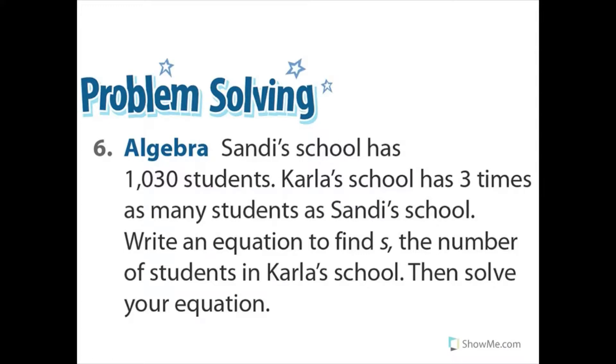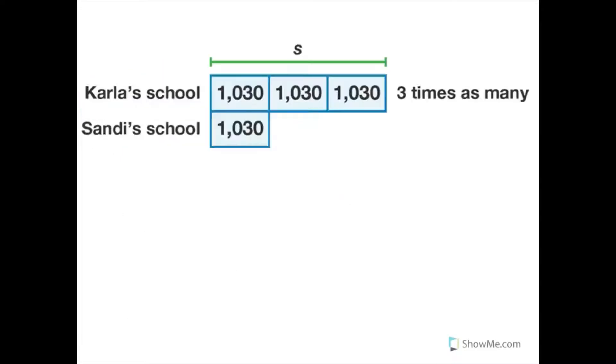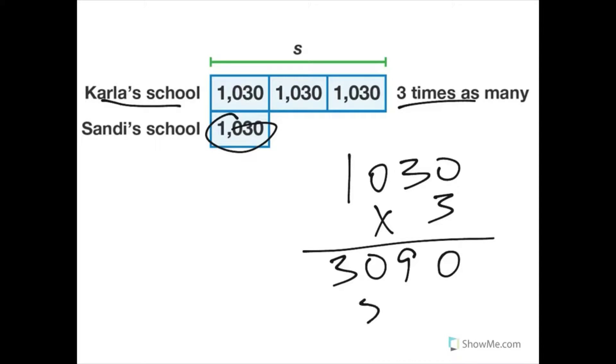Number six says, Sandy's school has 1,030 students. Kara's school has three times as many students as Sandy's school. Write an equation to find S, the number of students in Carla's school. Then solve your equation. So, Sandy's school has 1,030, right? Kara's school has three times as many. So we're going to take 1,030 and multiply it by three. That's going to be pretty easy because there's not going to be any carrying. Three times zero is zero. Three times three is nine. Three times zero is zero. Three times one is three. So, 3,090 students. And it wanted us to have an equation. So we can do 1,030 times three equals S.